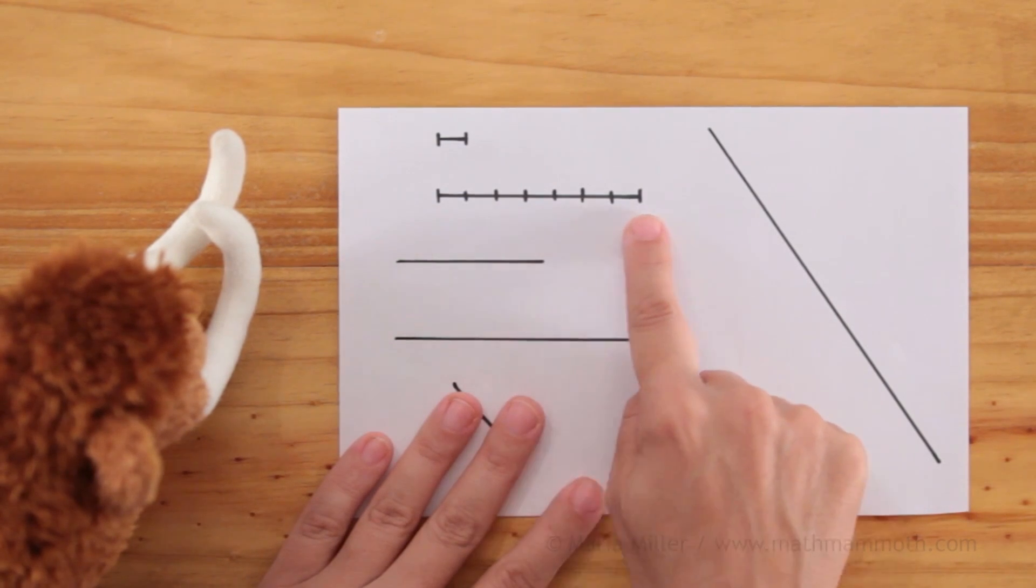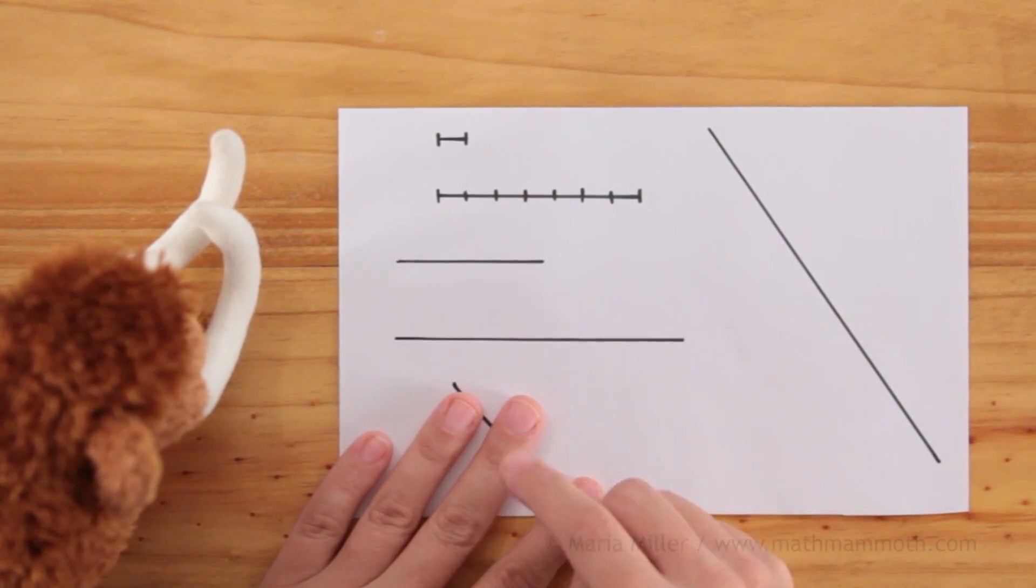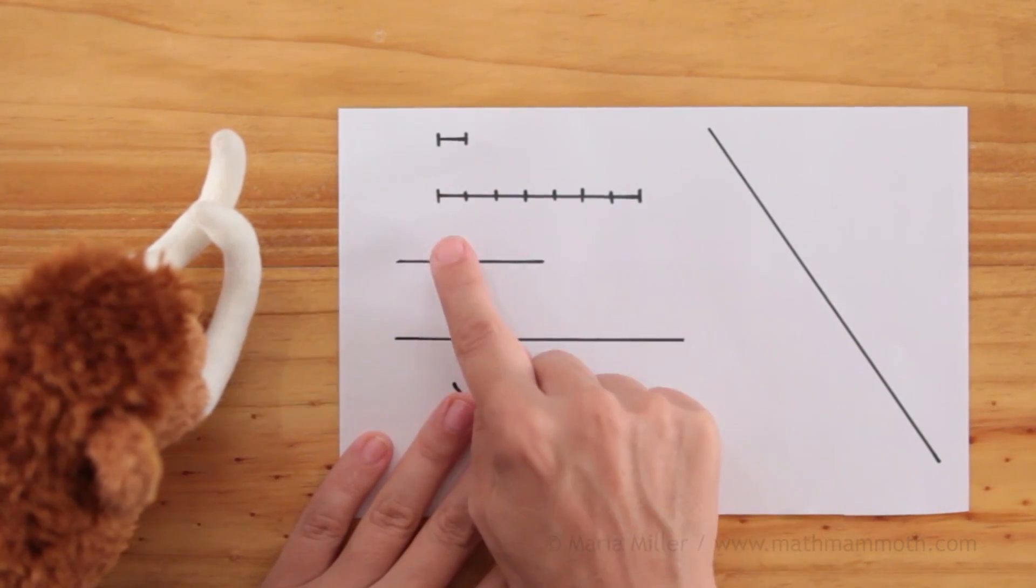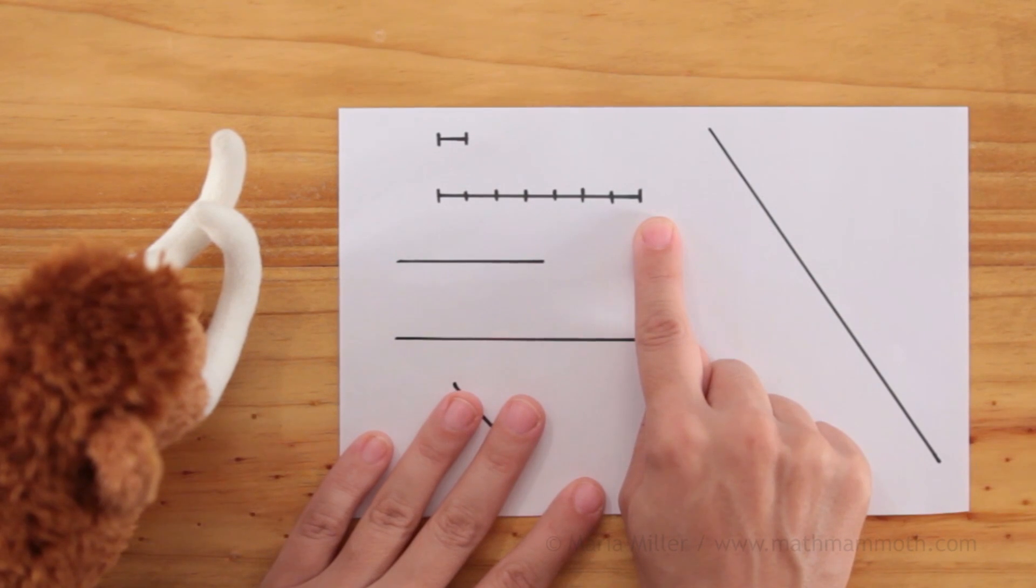Now over here you see many centimeters end to end. Let's count them. One, two, three, four, five, six, seven. So this line in total is seven centimeters long.